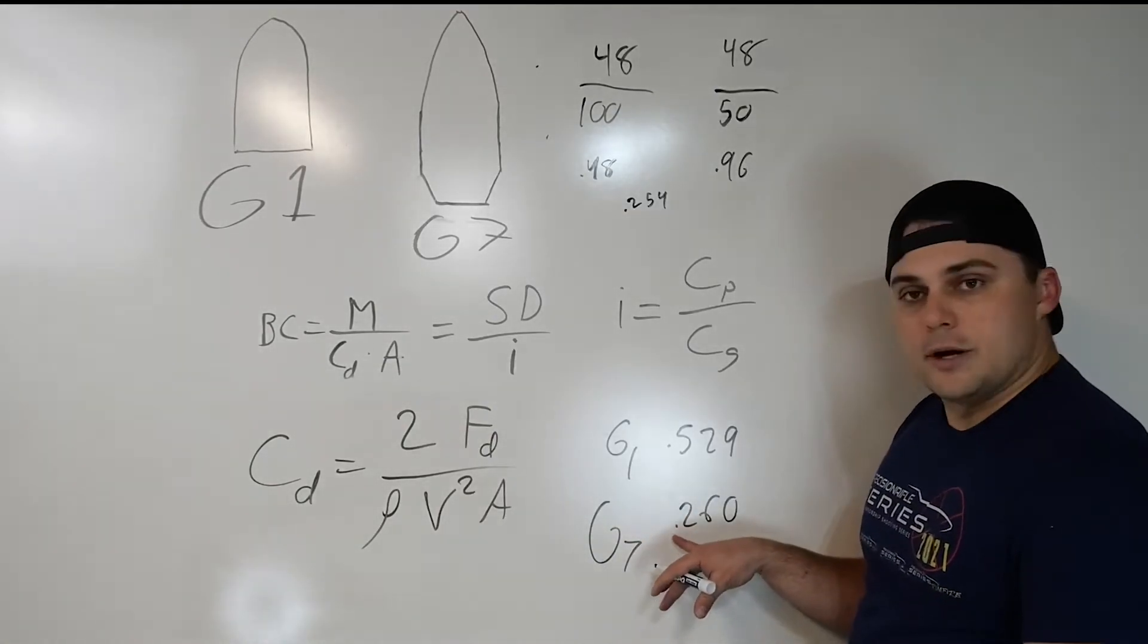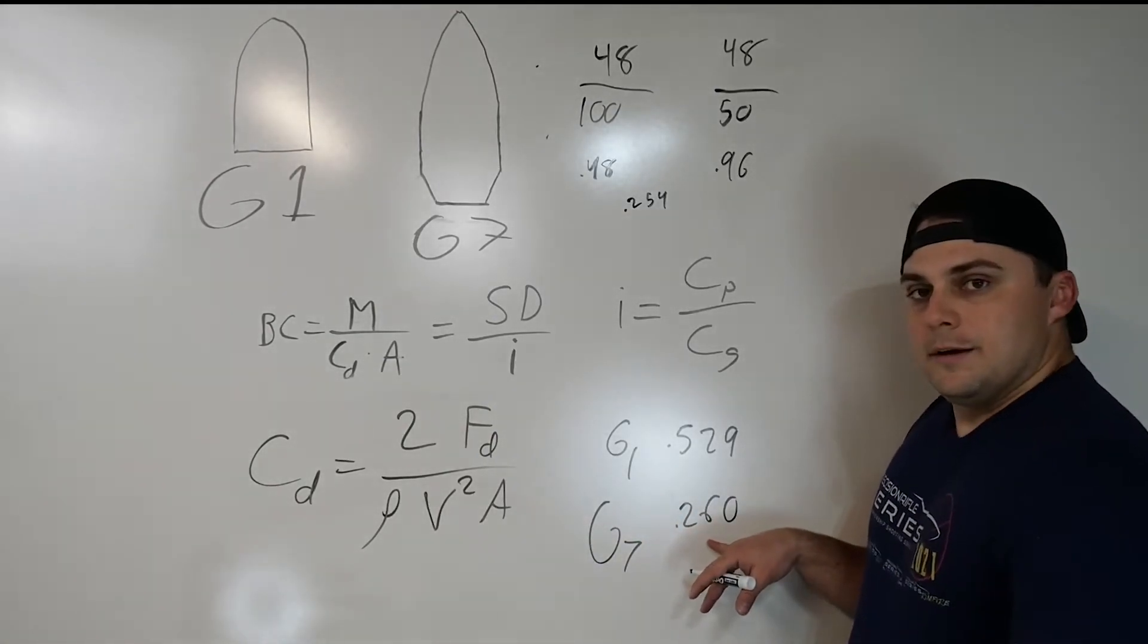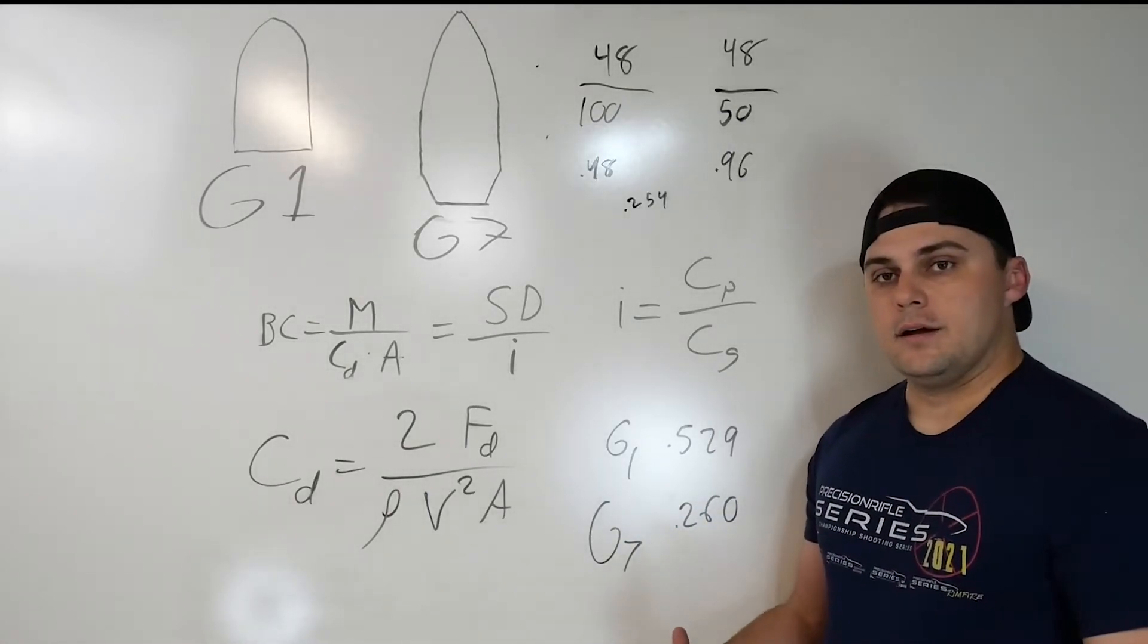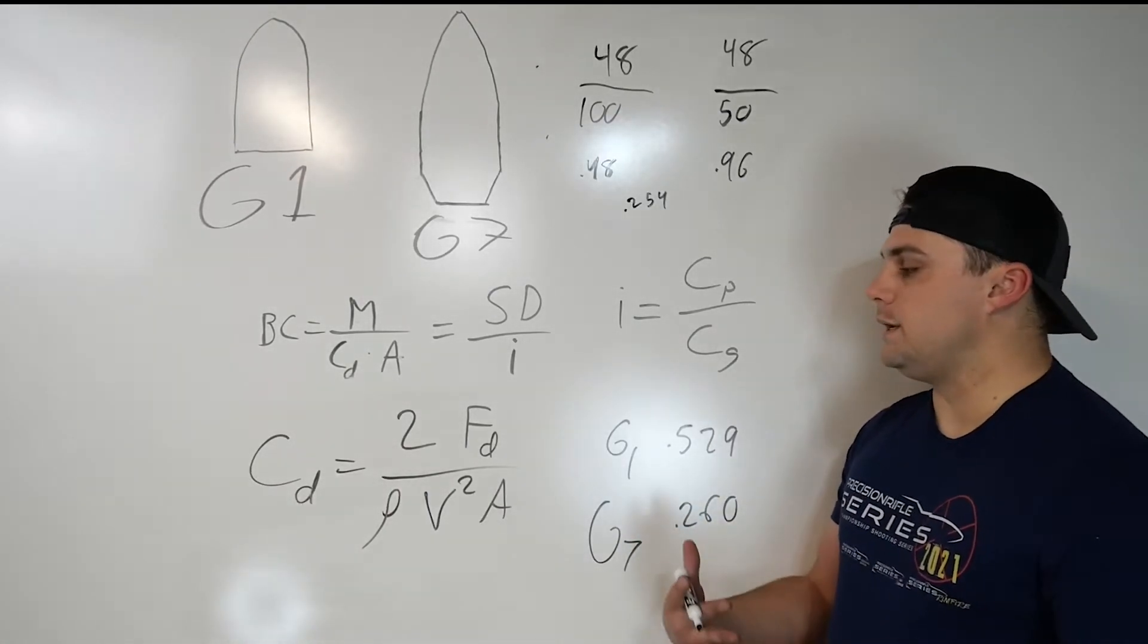So when you compare it to the G7, you get a much lower ballistic coefficient, but it's much more accurate because it's considering the shapes of the profiles to be nearly similar.